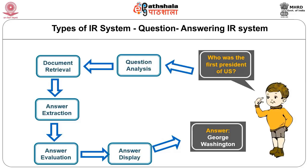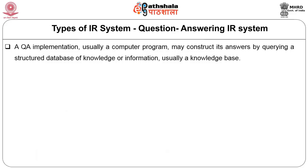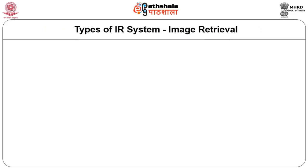QA systems are question answering systems. Basically, question answering systems were developed as part of expert systems in computer science and within domains of IR and natural language processing. Many initial NLP systems were developed for automatically answering questions posed by humans. In a QA implementation, a computer program may construct its answer by querying a structured database of knowledge, referred to as a knowledge base. More commonly, QA systems also find answers from unstructured collections of natural language documents, using techniques of information extraction, inferencing, and NLP.